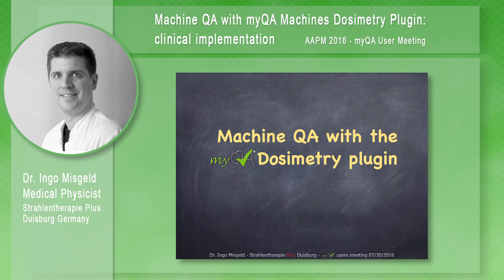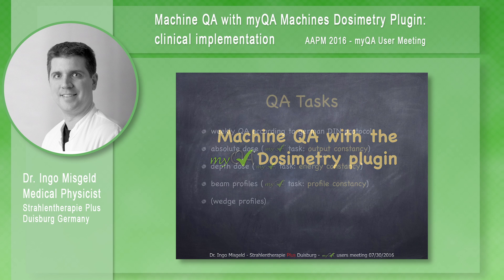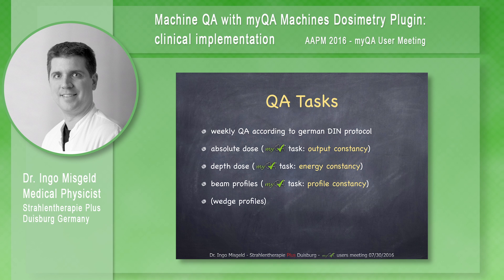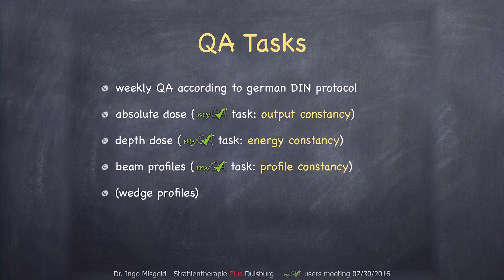Hello everybody. I'm going to talk about machine QA with the micro dosimetry plugin. Let me first thank the organizers Ralf Schirer and Tina Baker for inviting me. We have to perform regular QA tasks according to the German Dean protocol, which is in parts the same as the TG142 protocol, but there are differences. I'm not going to talk about the differences, but I want to talk about what we measure.